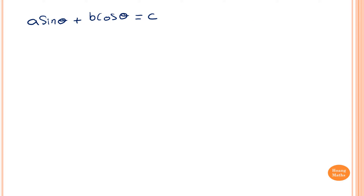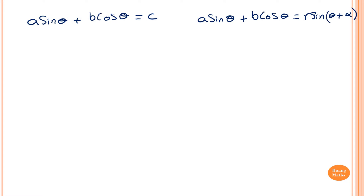Let's say a trick equation given is a·sinθ + b·cosθ equal to a constant. To solve this equation it can be very difficult, so in order to solve this kind of trig equation, we can convert a·sinθ + b·cosθ to r·sin(θ + α). Now alpha is an acute angle and it's called the auxiliary angle. If there is a minus, we put θ minus α instead.